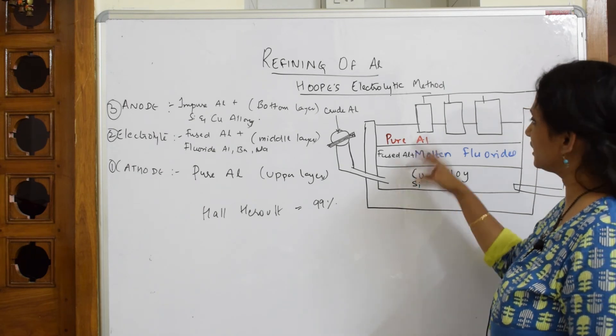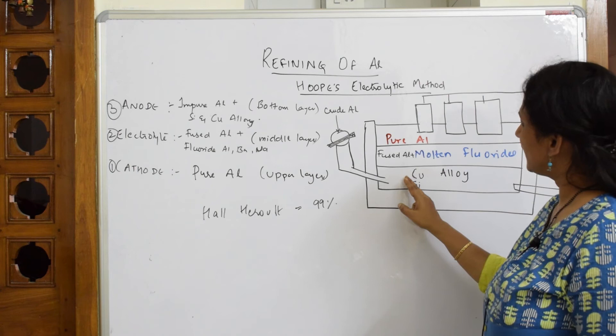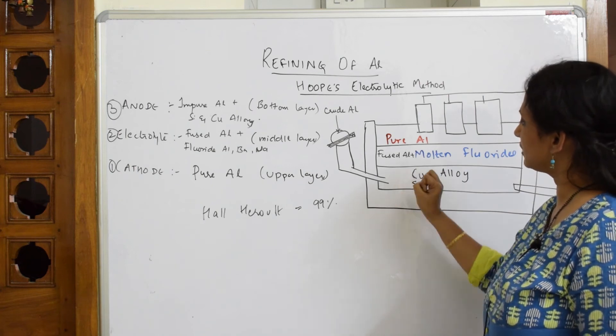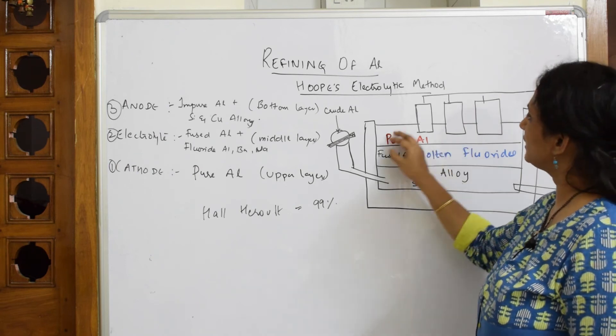Now during this process of electrolysis, the impure aluminum gets purified when they get exchanged with opposite electrodes, and from here, from the bottom layer, the amount of aluminum is collected.